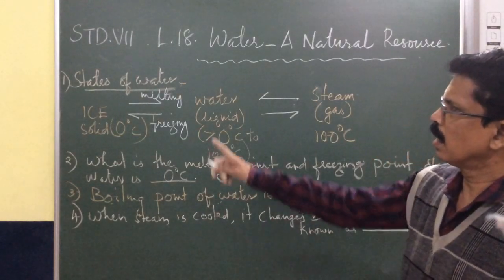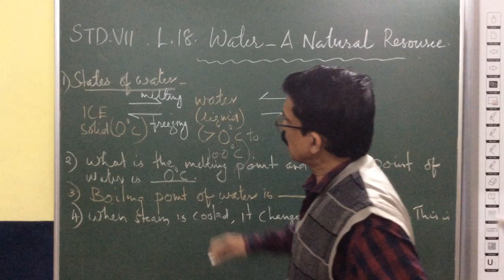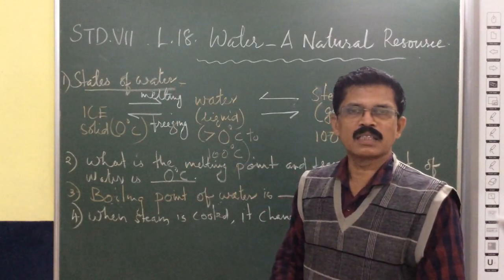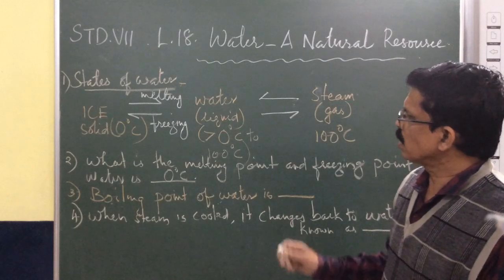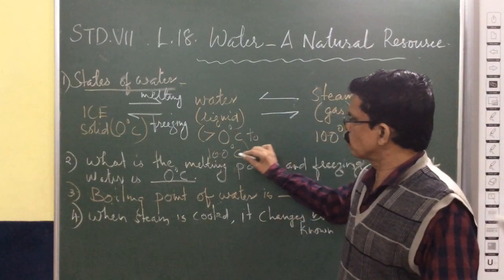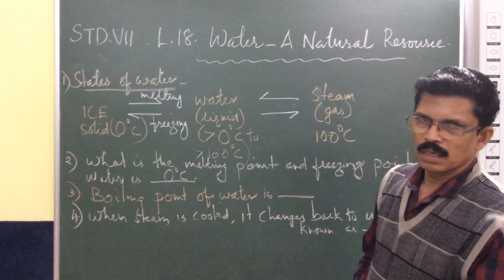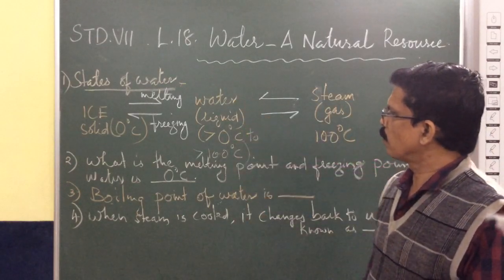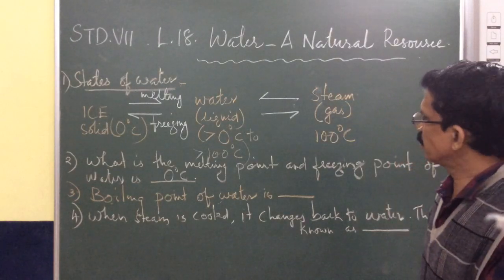So water freezes into ice at zero degrees and below. Now this ice can melt above zero degrees Celsius — from one, two, three, four, up to one hundred degrees. The ice can melt into water above zero degrees Celsius. Water in the liquid form is formed from ice from zero degrees up to one hundred degrees Celsius.